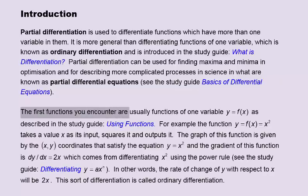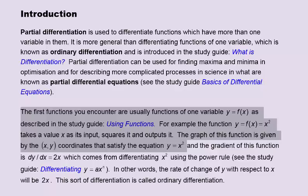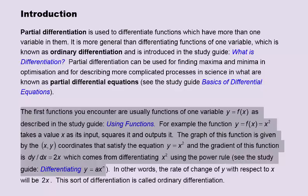The first functions you encounter are usually functions of one variable, y equals f of x, as described in the study guide Using Functions. For example, the function y equals f of x equals x squared takes a value x as its input, squares it and outputs it. The graph is given by the xy coordinates satisfying y equals x squared, and the gradient is dy by dx equals 2x, which comes from differentiating using the power rule. In other words, the rate of change of y with respect to x is 2x. This is called ordinary differentiation.